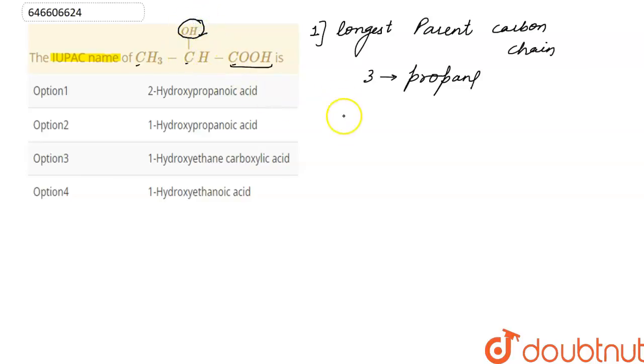Because of more priority of COOH in IUPAC nomenclature. Now second step is: start numbering the carbon atoms in the parent carbon chain.